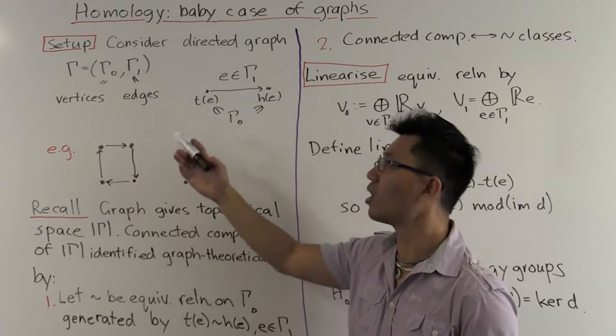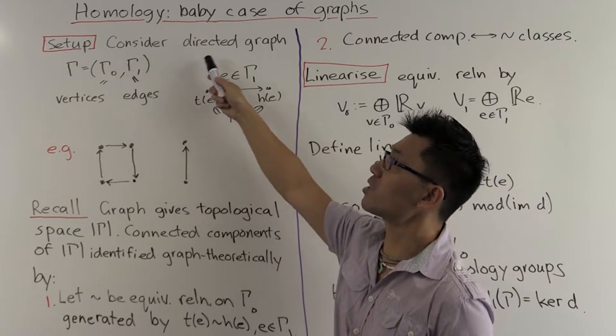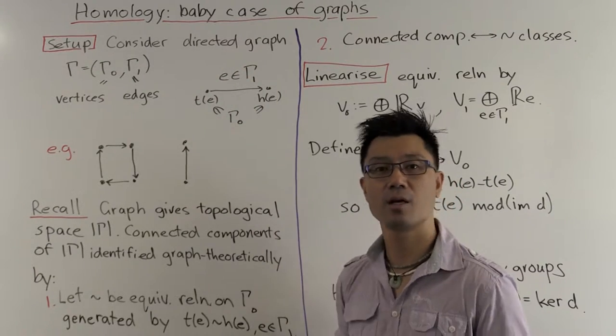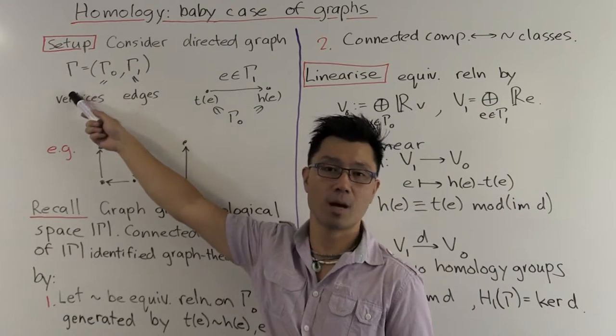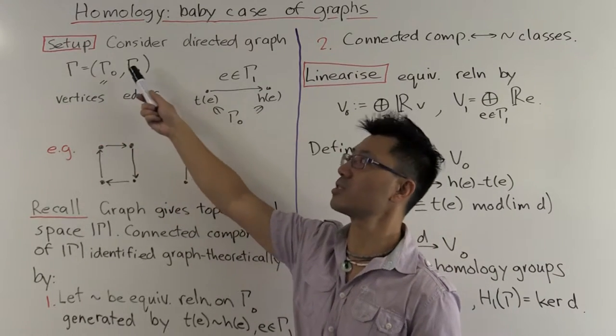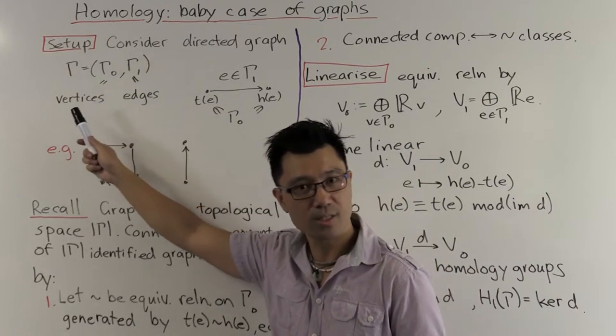So let's look at our setup. In this case we're going to have a directed graph, and our notation for that graph is gamma. We have a set of edges, gamma 1, and a set of vertices, gamma 0.